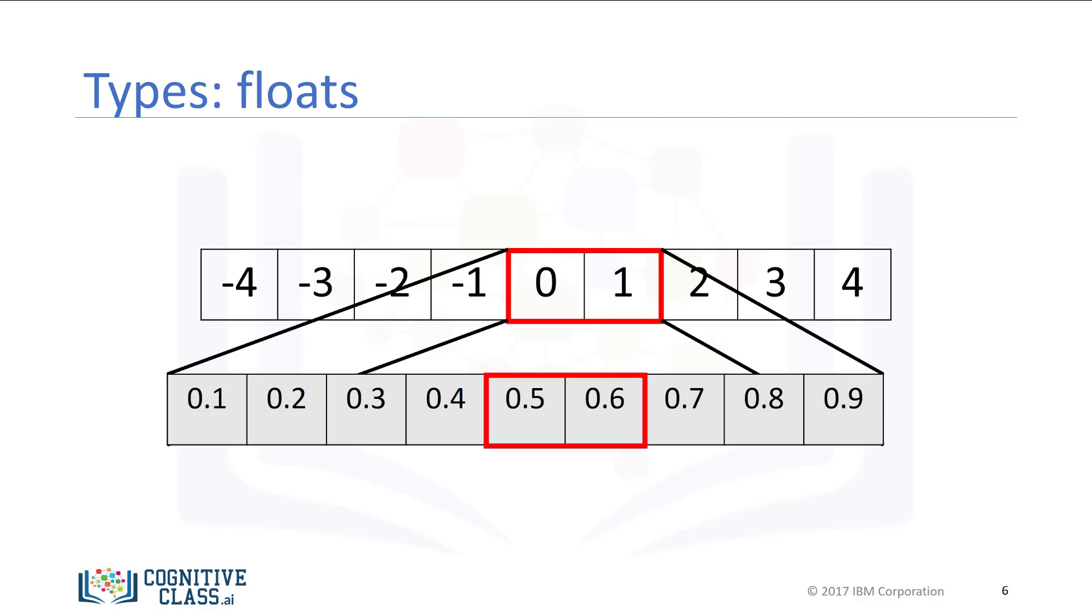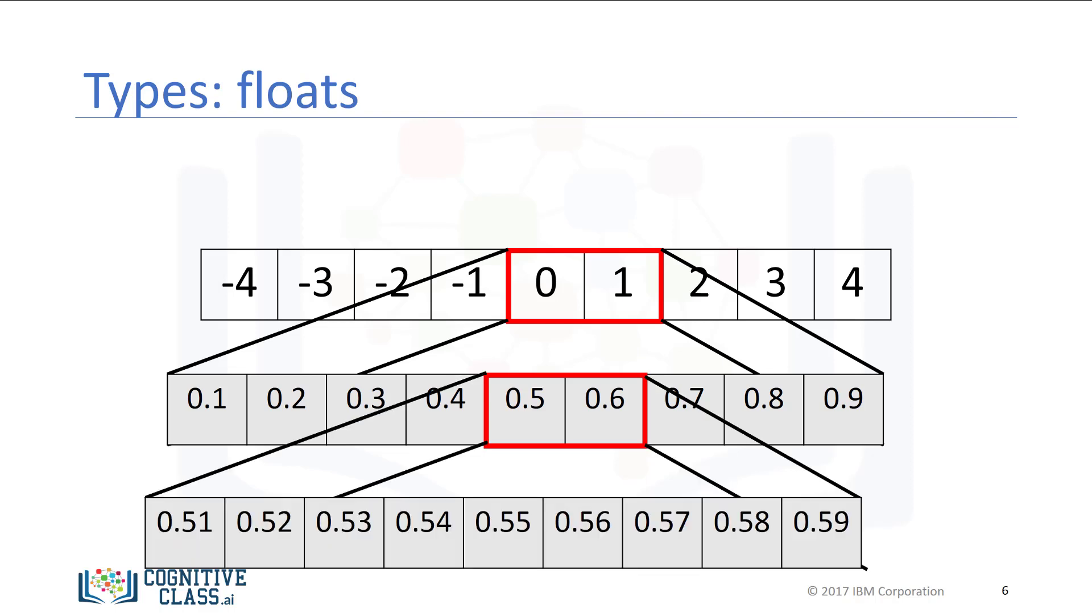Similarly, consider the numbers between 0.5 and 0.6. We can select numbers in between them. These are floats as well. We can continue the process, zooming in for different numbers. Of course, there is a limit, but it is quite small.